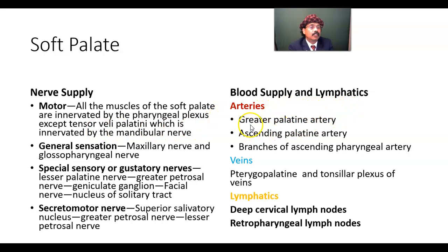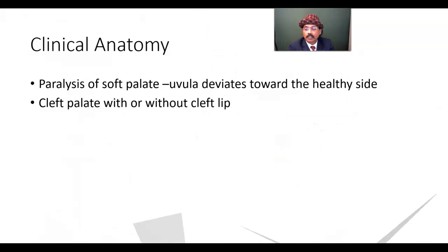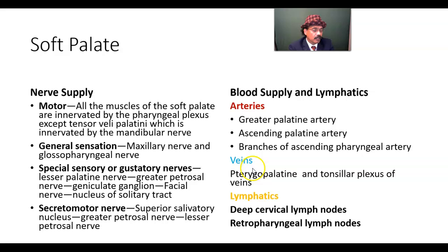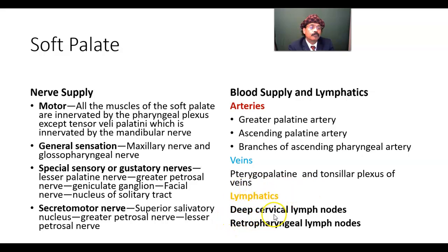Blood supply and lymphatics: the arterial supply is from the greater palatine artery, a branch of the maxillary artery; the ascending palatine artery, a branch of the facial artery; and branches of the ascending pharyngeal artery, a branch of the external carotid artery. Venous drainage is through the pterygoid venous plexus and tonsillar venous plexus. Lymphatics drain to the deep cervical lymph nodes and retropharyngeal lymph nodes.